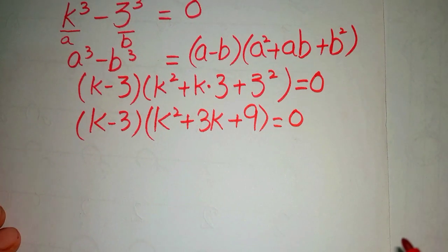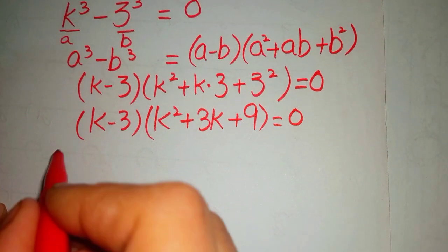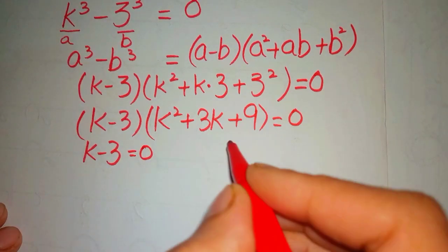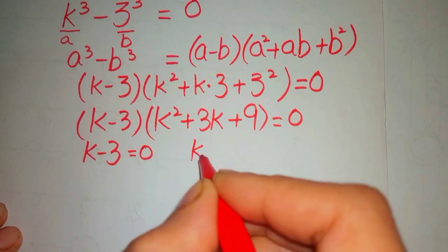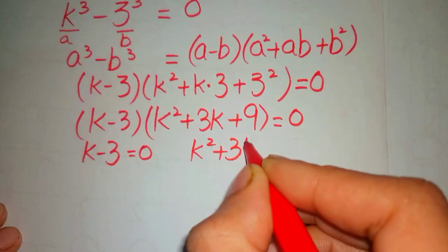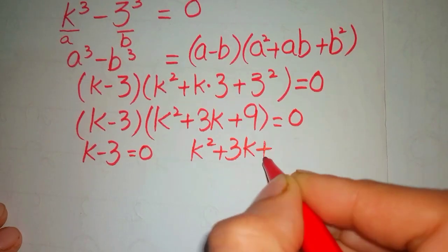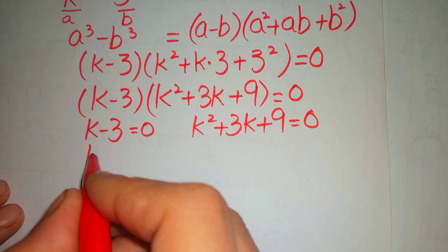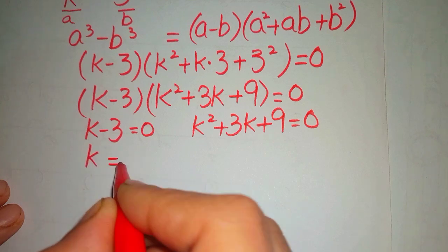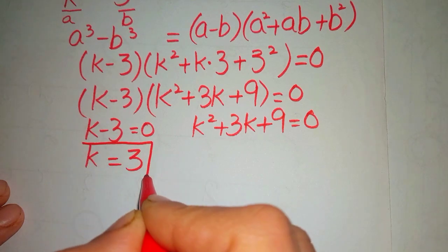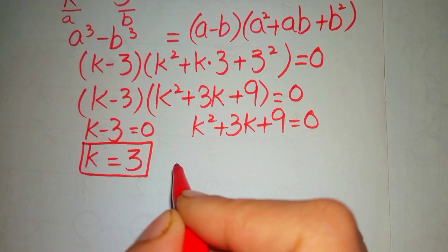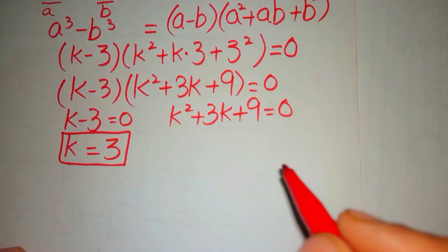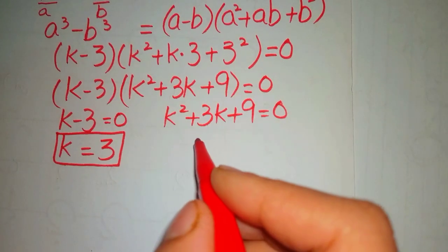We can see that there are two factors giving values for k: k minus 3 equals 0, and k squared plus 3k plus 9 equals 0. From the first factor, k equals 3, since taking negative 3 to the right side makes it positive 3.